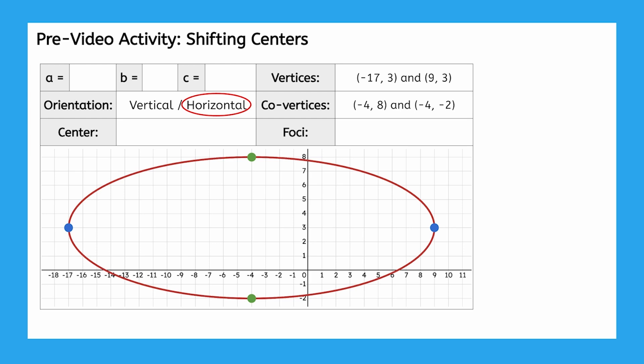Is this ellipse centered at the origin as usual? If we find the middle between the vertices and the co-vertices, we find that the center is at negative 4, 3.